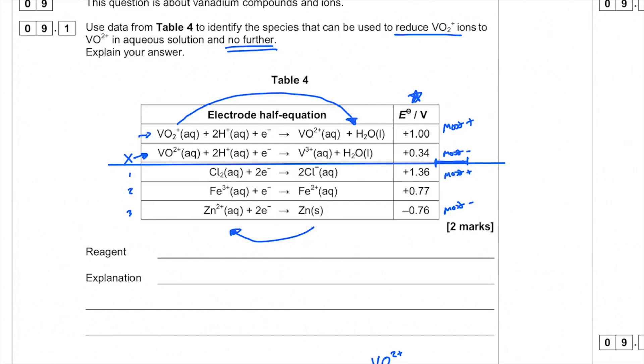So the thing is, we're looking for something on the right-hand side over here. Now chloride ions, will they actually reduce VO2+ to VO2+? No, they won't because this value here, +1.36, is higher than +1.00. So that's not going to happen. However, both Fe2+ and zinc, both of those have E° values that are lower than 1, so that is why both of those will actually cause that VO2+ to be reduced.